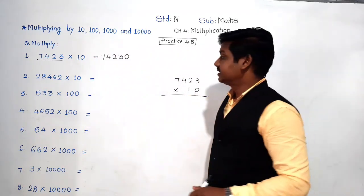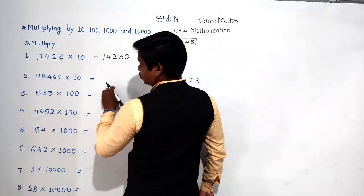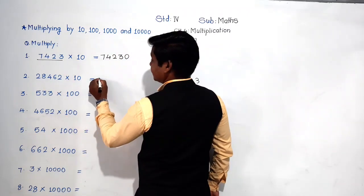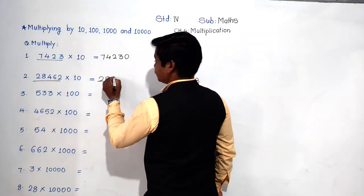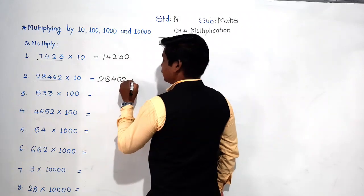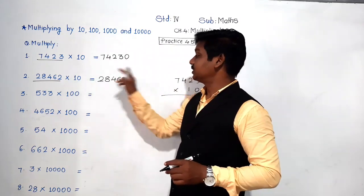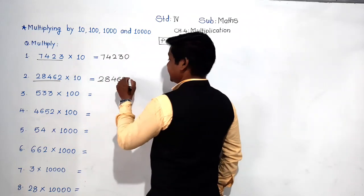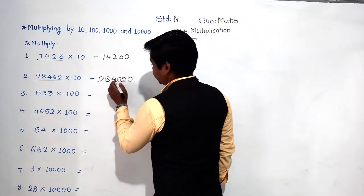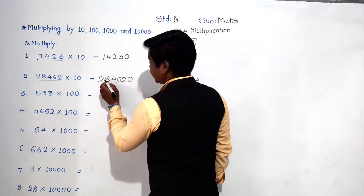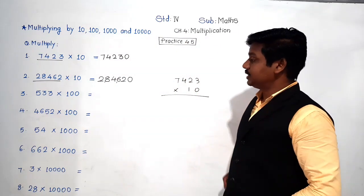Next: 28462 into 10. Write this number 28462 as it is, and since 10 has one zero, put that zero at the end. Finish! The answer is 284620.